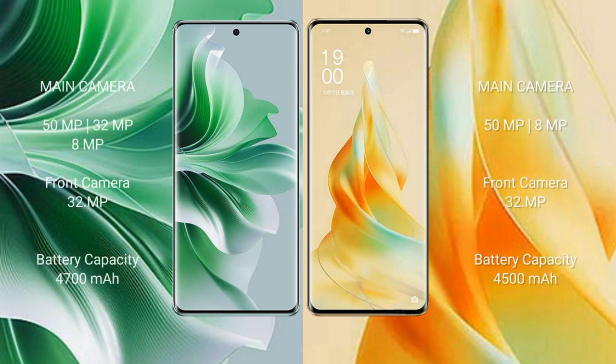The OPPO Reno 11 Pro features a triple rear camera setup: 50MP, 32MP, and 8MP, with a 32MP front camera. The OPPO Reno 9 Pro features a dual rear camera setup: 50MP and 8MP, with a 32MP front camera.